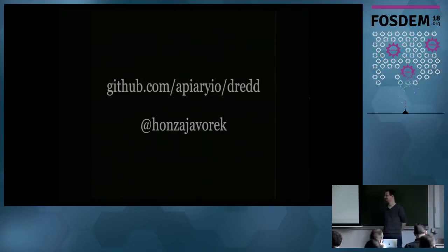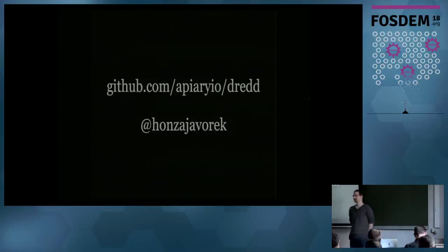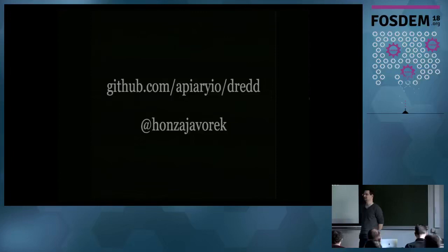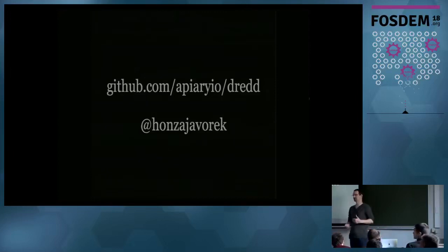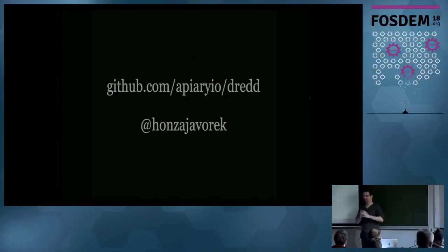Maybe we have time for one question, then the rest in the hallway. Question from the audience: how do you formulate the test in Swagger when you only have the formal syntax but no semantics? The testing of the API works on the basis that you have the API description file, and it's specification by example — similar to Cucumber or the README — and you need to provide examples. They're crucial because then the tests can run against them.